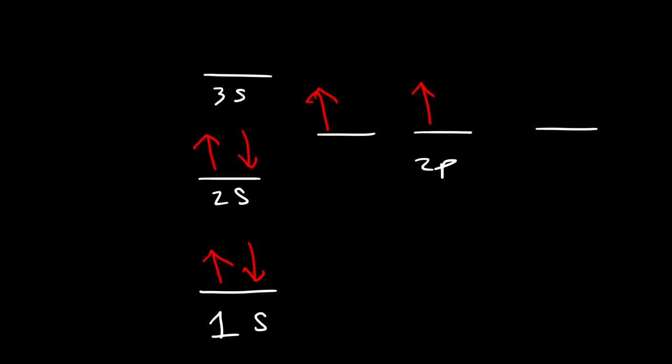Now, the last thing that we need to talk about is Pauli's exclusion principle, which basically states that no two electrons can have the same set of four quantum numbers. And those four quantum numbers are n, the principal quantum number, which describes the size and the energy level of the orbitals.